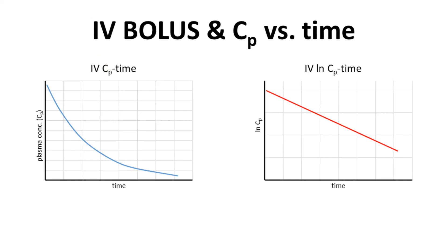The drug is initially at a high concentration and then slowly tapers off. If we plot the data as natural log of CP versus time, then assuming the drug is behaving as expected, you will get a straight line.